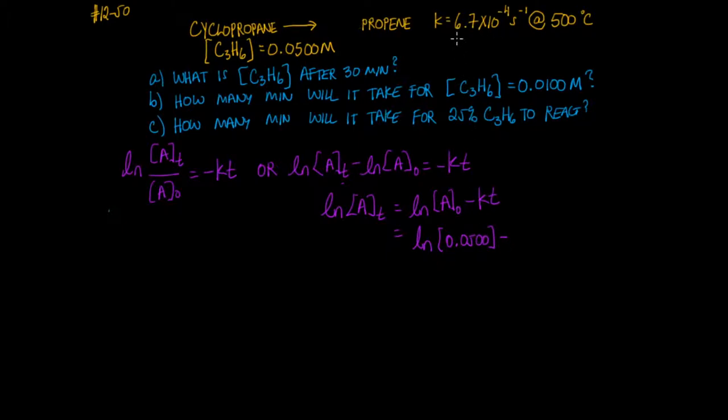And the rate constant is given to us here. And time we want to substitute in here. But what you'll notice is that they're giving us minutes, whereas the rate constant is given to us in seconds. So we need to convert 30 minutes to seconds. There are 60 seconds per one minute.